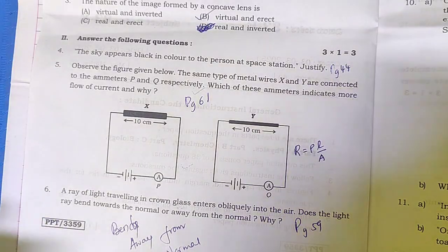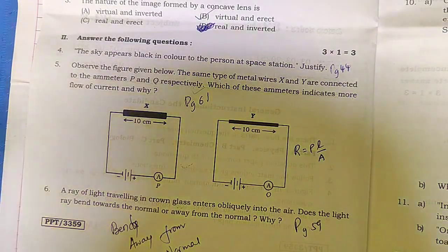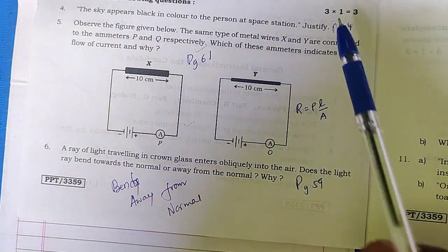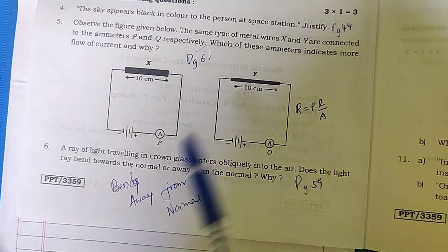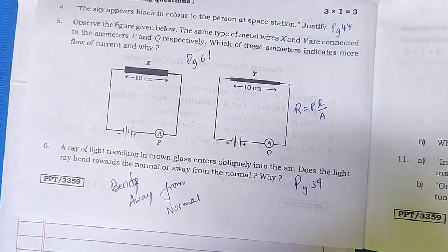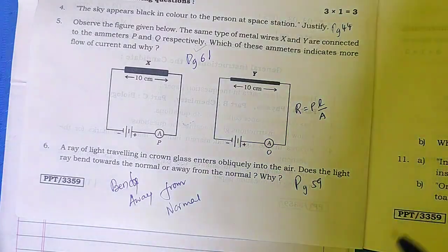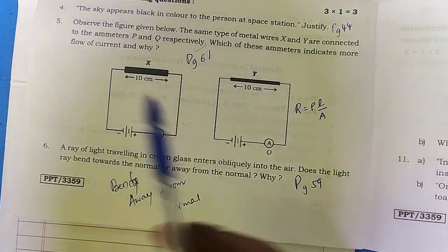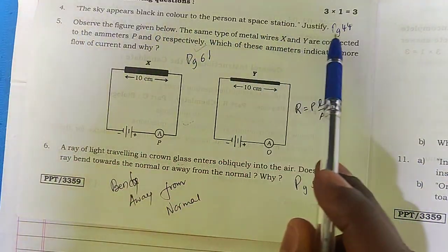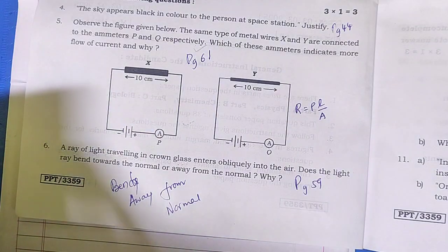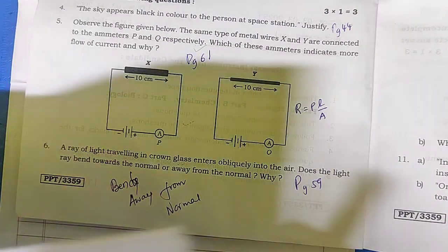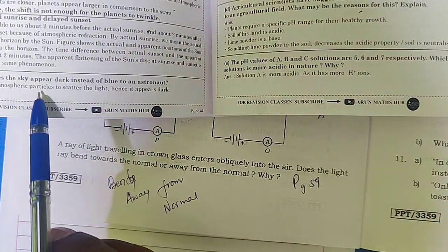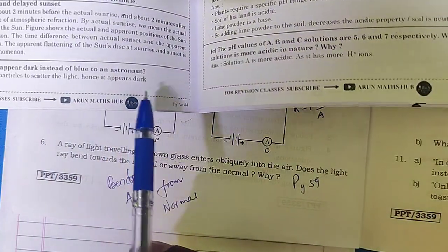I have marked the page numbers so you can check the answers in the '70 Plus' book. I'll be compiling and posting key answers as a PDF in the group — do join the WhatsApp channel. For example, the question about why the sky appears black to a person on the space station is on page 44 of my book: there are no atmosphere particles to scatter light, hence it appears dark.